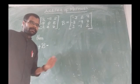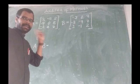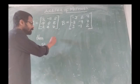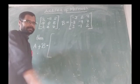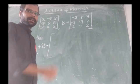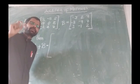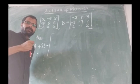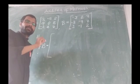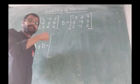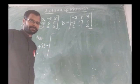So, we are going to add these two matrices A and B. It will be like this: we are going to add the element of the first matrix with the corresponding element of the next matrix.